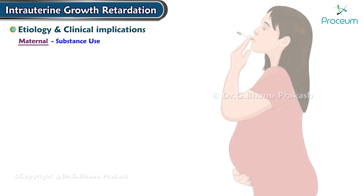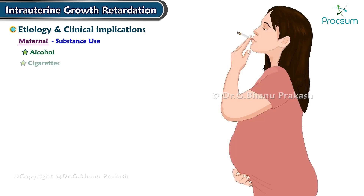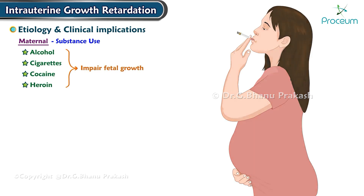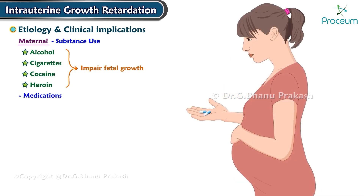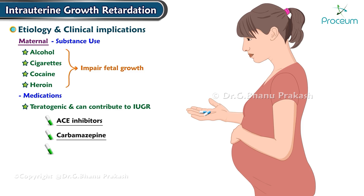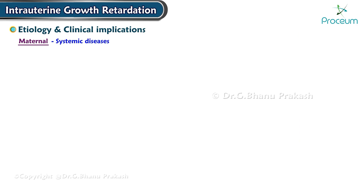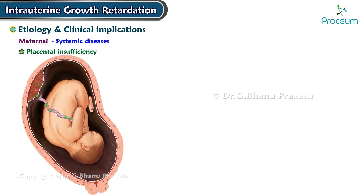Among maternal causes, substance use including consumption of alcohol, cigarettes, cocaine, and heroin during pregnancy can impair fetal growth. Certain medications have been identified as teratogenic and can contribute to intrauterine growth restriction, including angiotensin converting enzyme inhibitors, carbamazepine, phenytoin, and warfarin.